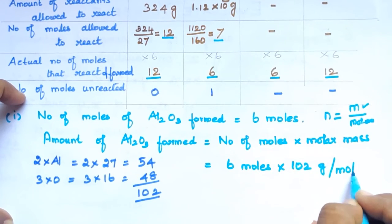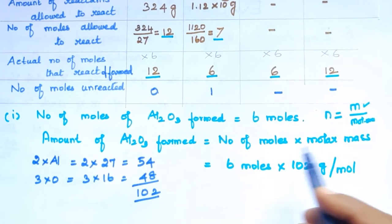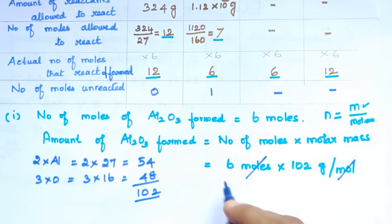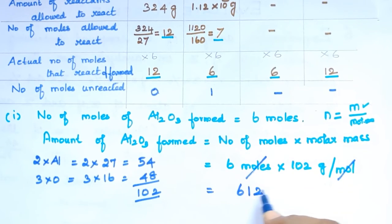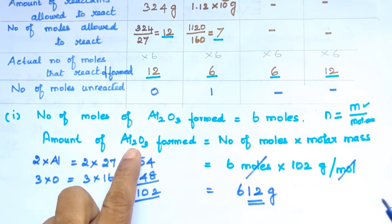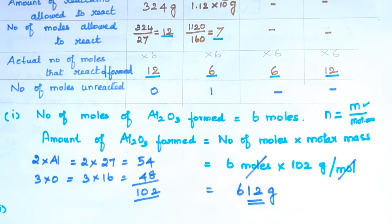Moles cancel. Six moles of Al2O3 is formed. The molar mass of Al2O3 is 102 g/mol, so 6 × 102 = 612 grams of aluminium trioxide will be formed.